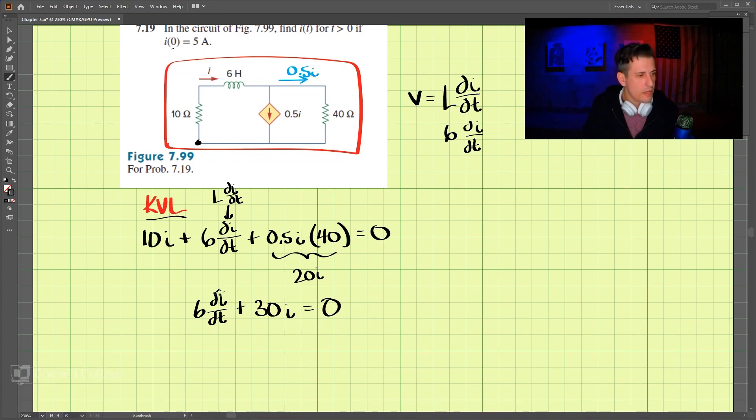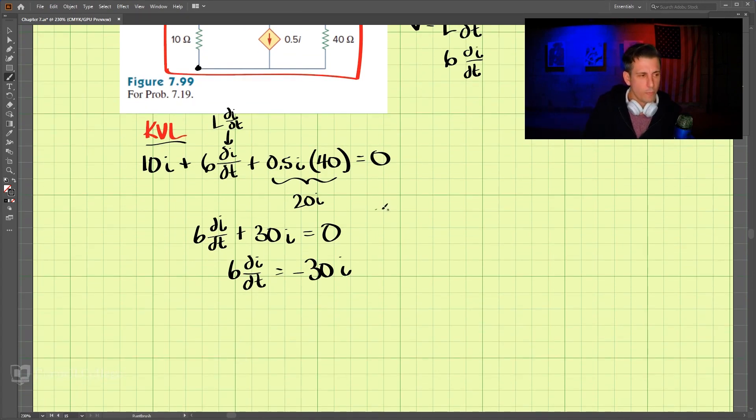So if we do this a little bit further, we'll move 30 to the other side. So we have 6 dI/dt equals negative 30I. And now I'm going to move I to this side and dt to this side. So we have 6 dI over I equals negative 30 dt.